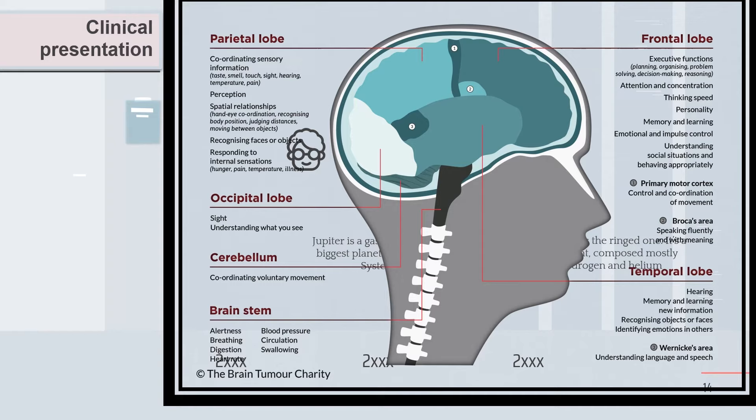Now, at the clinical presentation, you can expect the site of the tumor according to patient symptoms and signs. The frontal lobe is responsible for executive functions like planning and organizing, problem solving, decision making, and reasoning. The parietal lobe is responsible for coordinating sensory information like taste, smell, sight, hearing, temperature, pain, and perception.